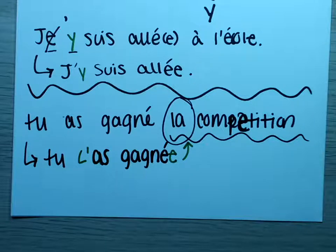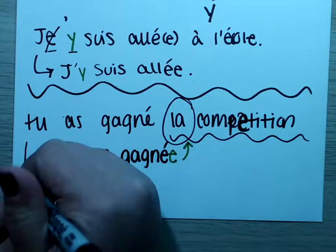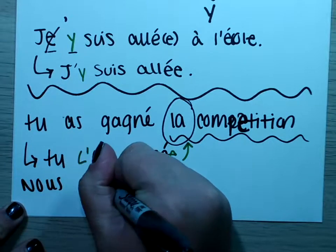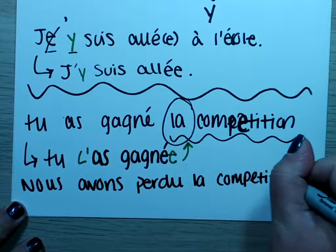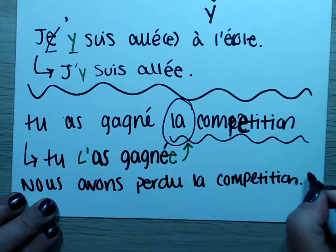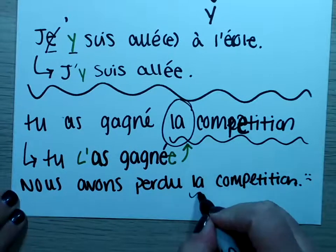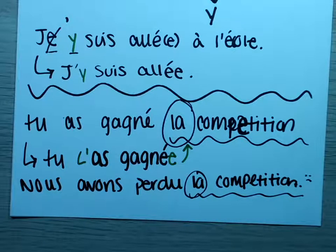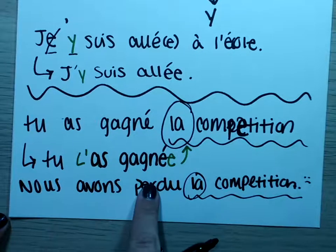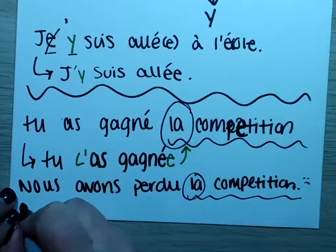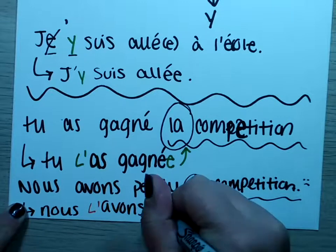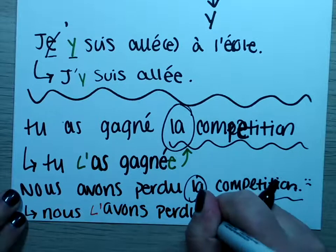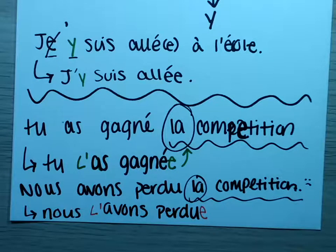Let's do another example in a different color so it's easier to see. 'We lost the competition': nous avons perdu la compétition. We replace la compétition with la. In the passé composé, la goes before avons, and perdu gets an e on the end. So the rewritten sentence is nous l'avons perdue — 'we had lost it.'